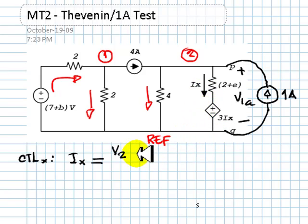Minus the value of the source, negative 3Ix, divided by the resistance of the branch, 2 ohms, because we are assuming this is 0 and this is 0, 2 ohms. That is our first equation.